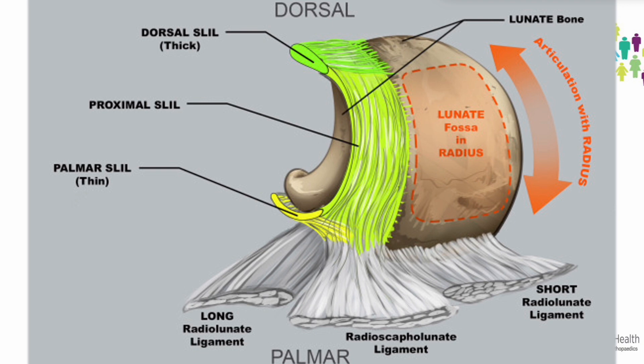This picture shows the thick dorsal ligament at the top, joined by the proximal fibres to the volar component, which is quite thin.